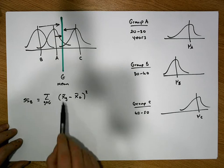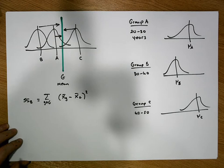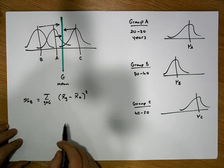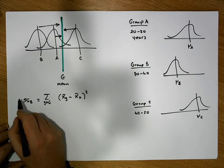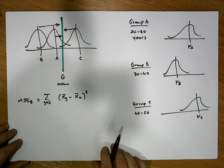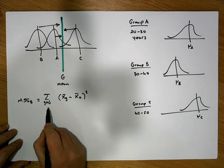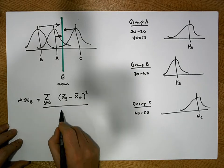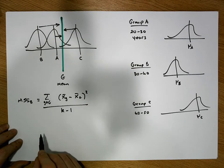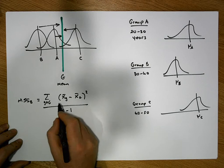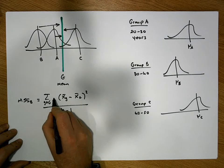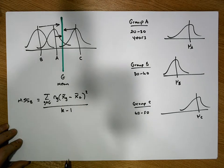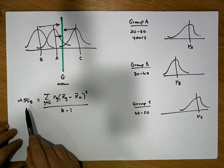There's a little modification that we make here. We actually calculate the average of this, so we calculate the mean sum of squares between by dividing by how many groups we have minus one. We also take into consideration the individual group sizes when we make this calculation.